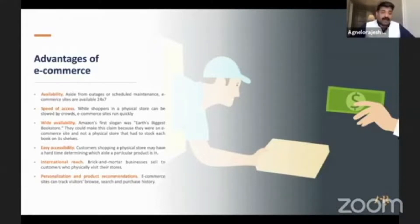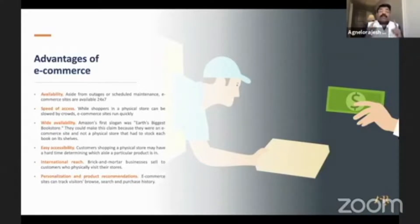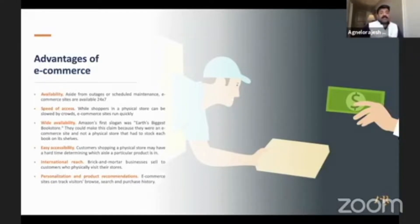Easy accessibility is another feature and advantage — a customer shopping in a physical store may have difficulty locating a particular product, but not so online. International reach is also significant: brick-and-mortar businesses sell only to customers who physically visit their stores, making them geographically restricted. Online, anyone can sell any product in any part of the world at any time. E-commerce sites can also personalize product recommendations by tracking visitors' browsing and purchase history.